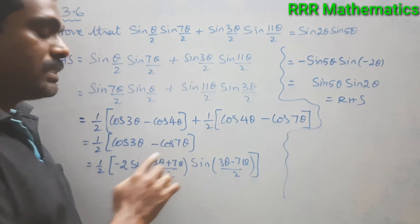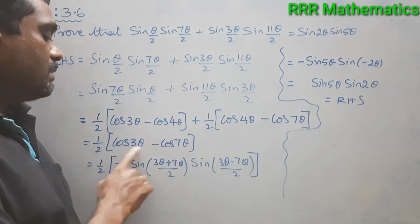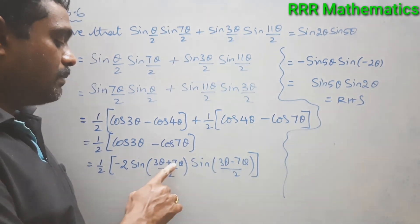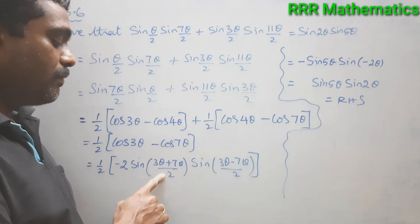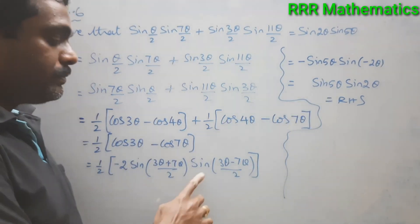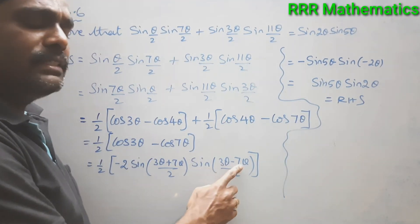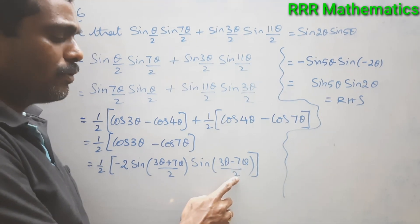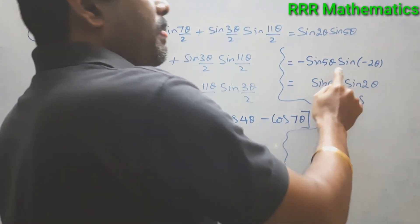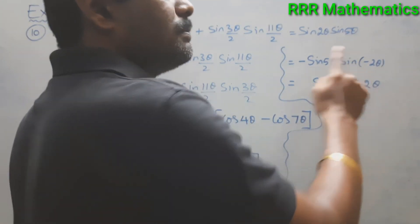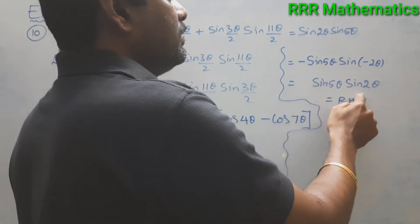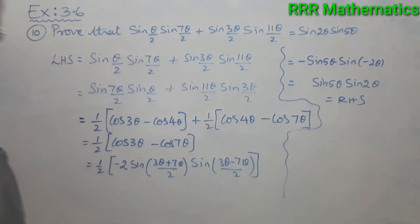Now applying cos C − cos D = −2·sin((C+D)/2)·sin((C−D)/2): C+D = 10θ so (C+D)/2 = 5θ; C−D = −4θ so (C−D)/2 = −2θ. The 2s cancel. Since sin(−2θ) = −sin 2θ, minus times minus gives plus: sin(5θ)·sin(2θ), which is the right hand side. Hence proved.